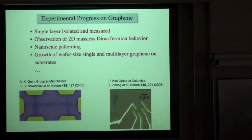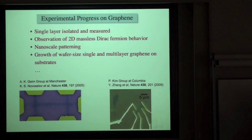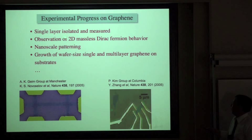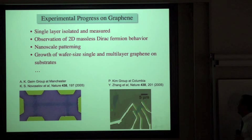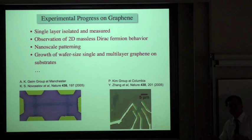In terms of experimental progress, there has been a huge amount in the last few years. Single layers of graphene have now been routinely isolated and measured, confirming the behavior of a massless Dirac fermion system. Researchers are now able to make narrow patterned structures of graphene such as nanoribbons, and wafer-sized single and multi-layered graphene growth on various substrates has also been achieved.